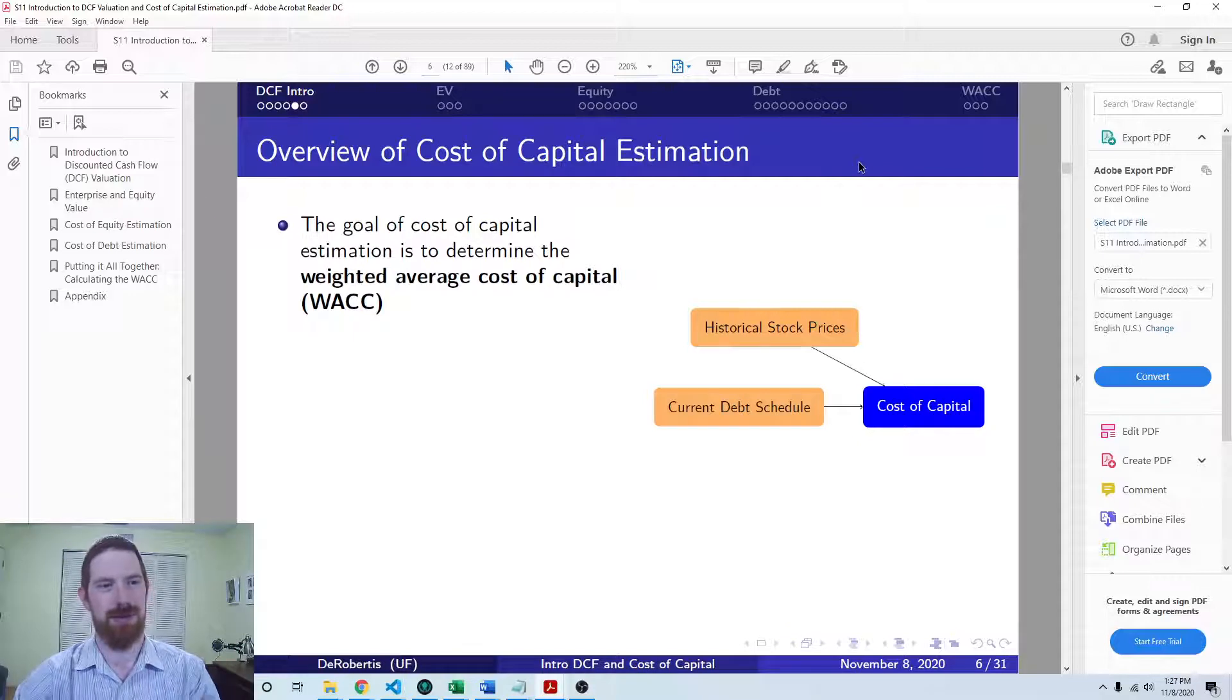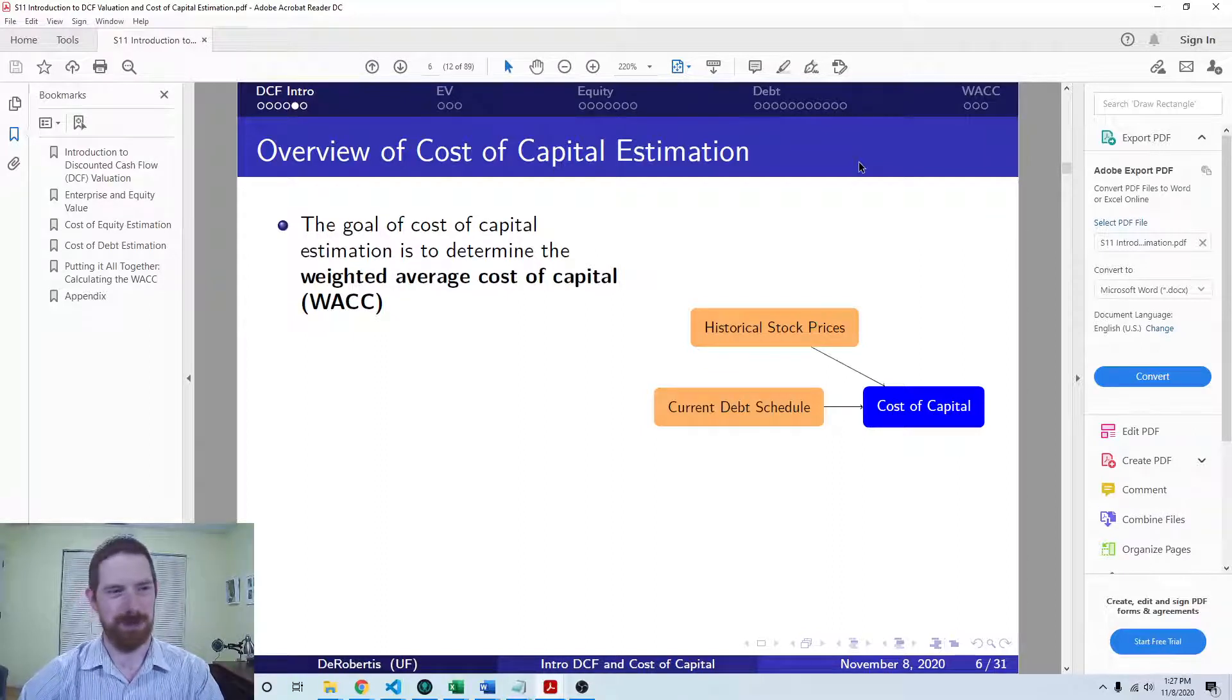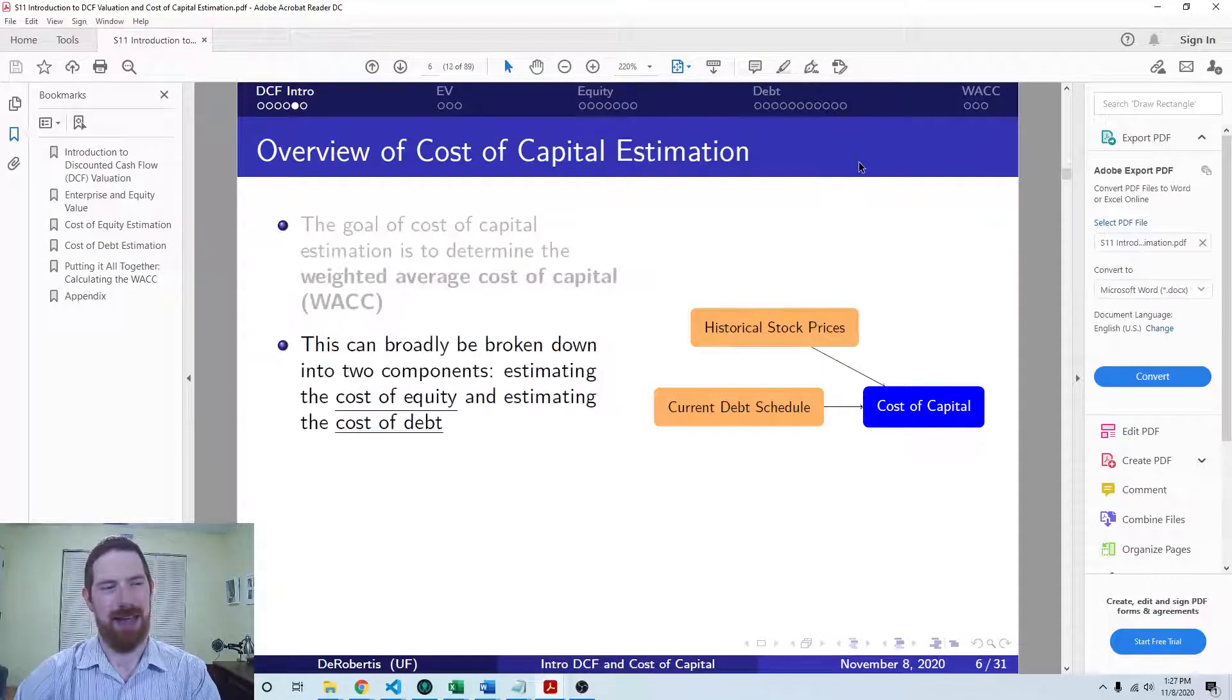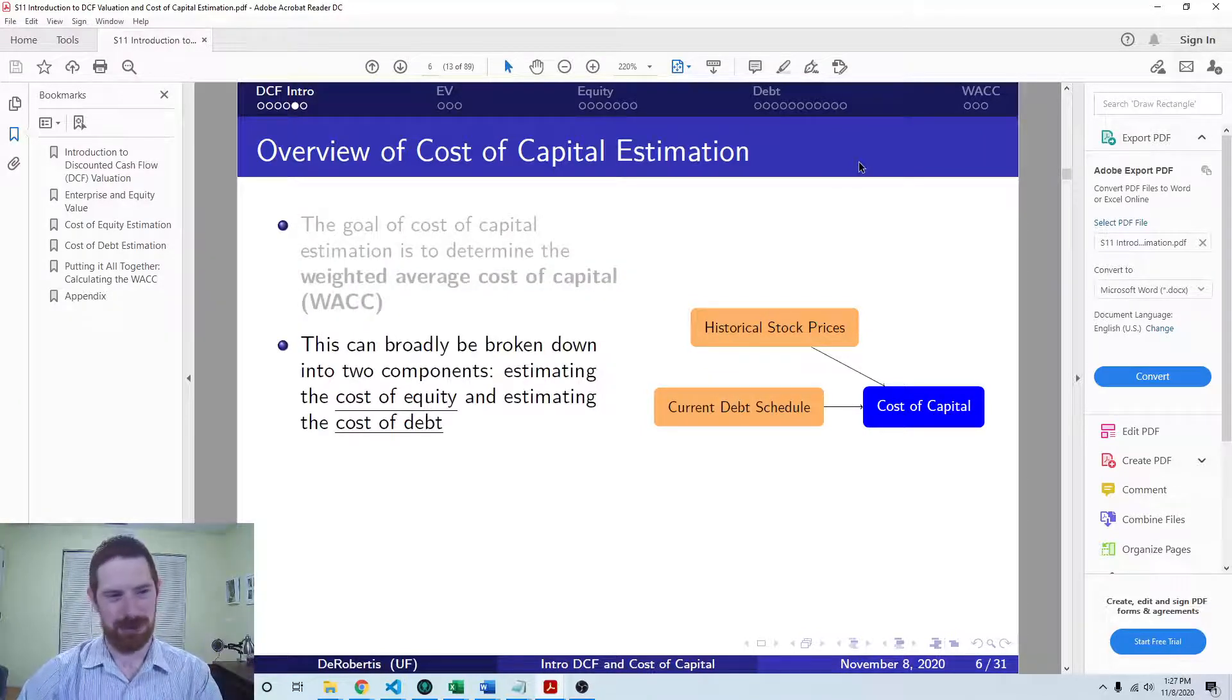So we're going to be digging in this lecture series into the cost of capital estimation. And I just quickly mentioned before that what we're trying to get to is the weighted average cost of capital or the WACC. And within that we have two components, the cost of equity and the cost of debt.